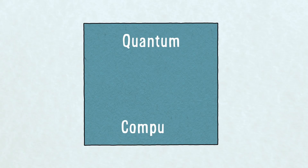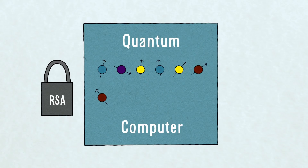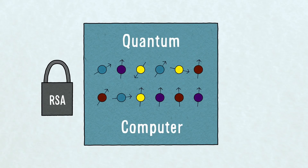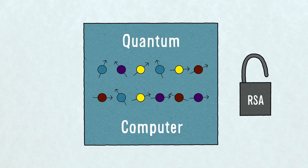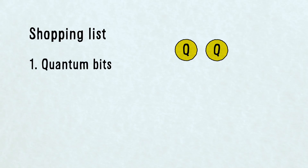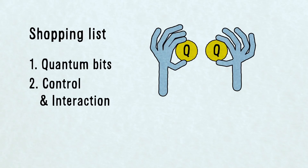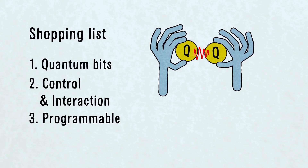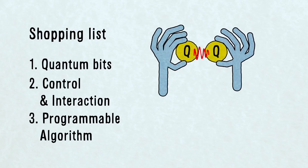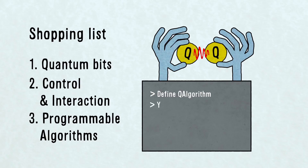So, you want to build a quantum computer to solve some special problems unbelievably fast? Well, then you need three things. One, quantum bits or qubits. Two, a way to control these qubits and to have separate qubits interact. Three, you need a flexible way to program operations to run different quantum algorithms.